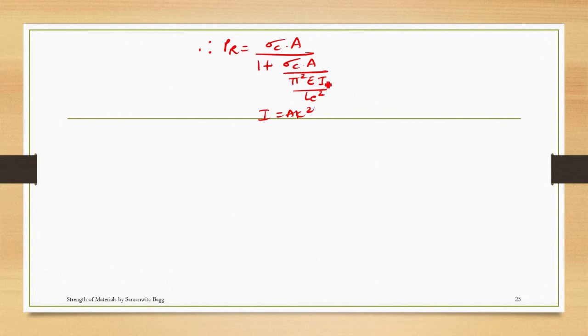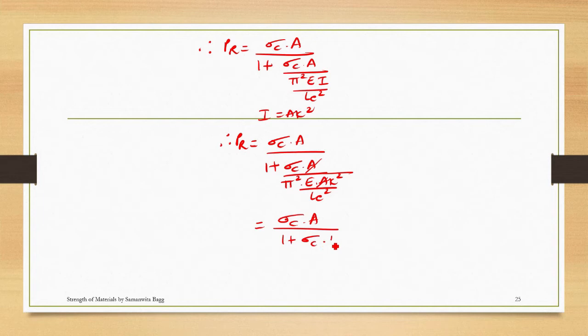So this area gets cancelled, and this Le can be shifted here, so I get sigma c into A upon 1 plus sigma c into Le squared upon pi squared into EK squared. Here sigma c into A upon 1 plus sigma c upon pi squared E can be taken as one term.